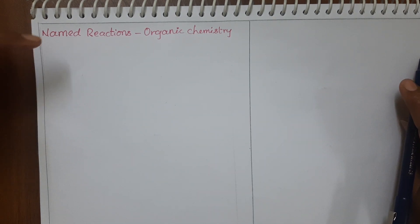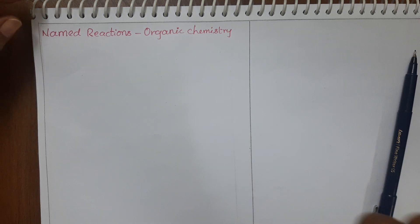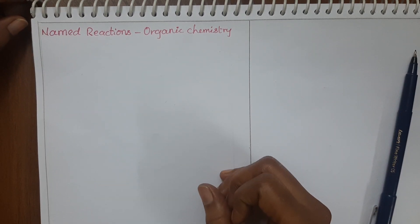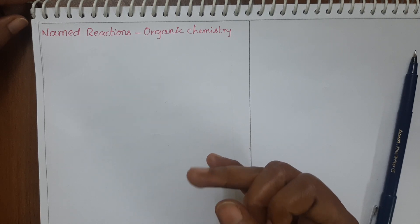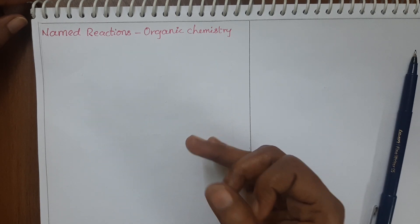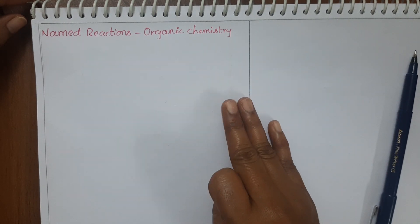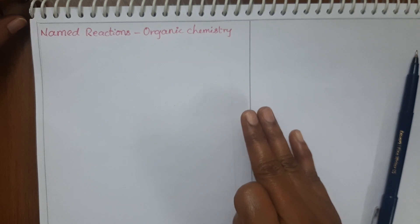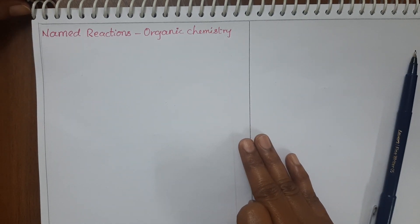So first of all, how many chapters are there in organic chemistry for class 12th or intermediate secondary students? In organic chemistry for class 12th we have three chapters: one is Haloalkanes and Haloarenes, organic compounds containing carbon, hydrogen and oxygen, and also organic compounds containing nitrogen. From these three chapters we can expect named reactions for essay questions in theory examination.